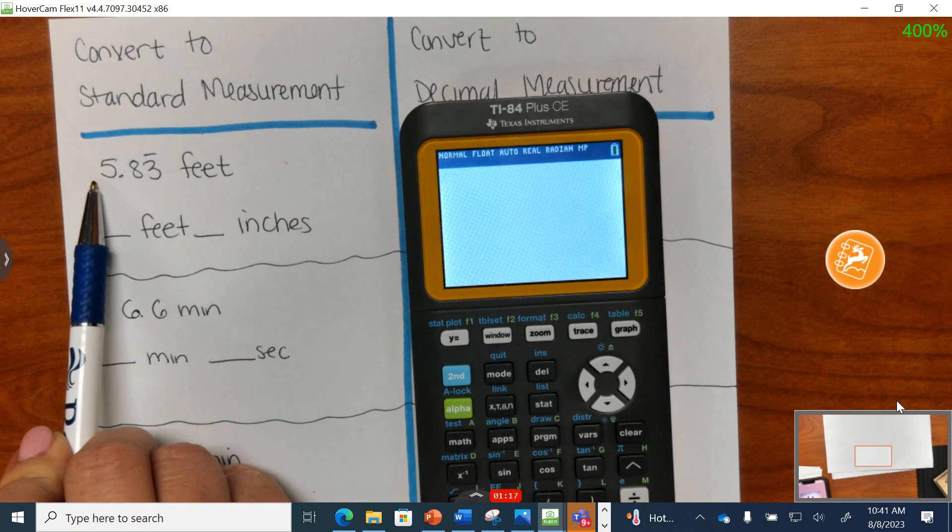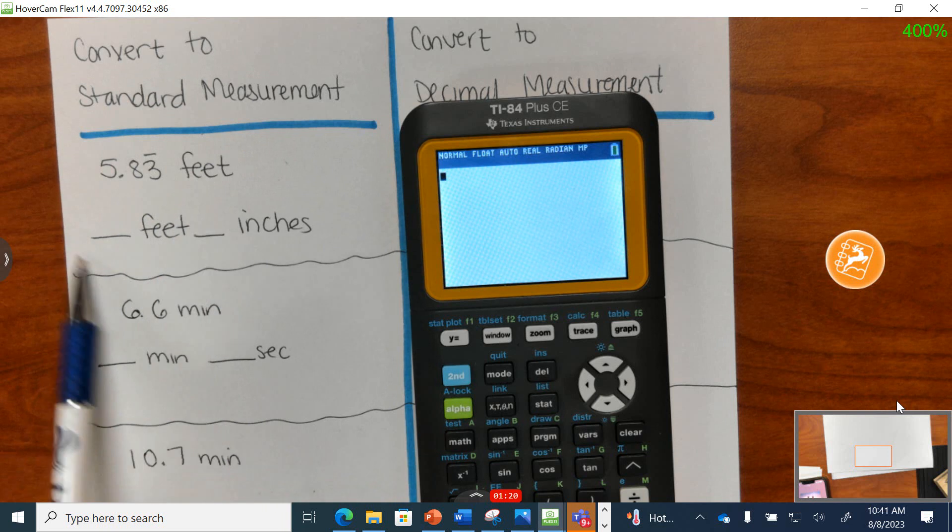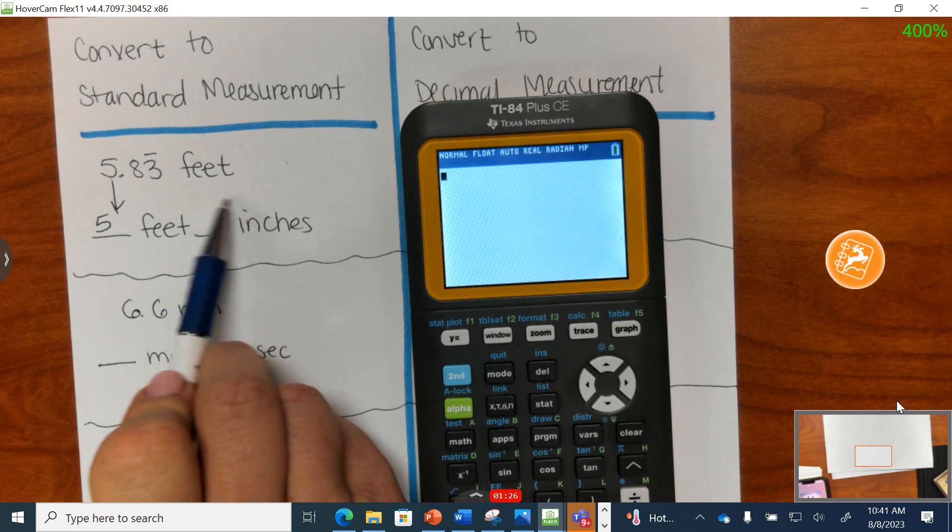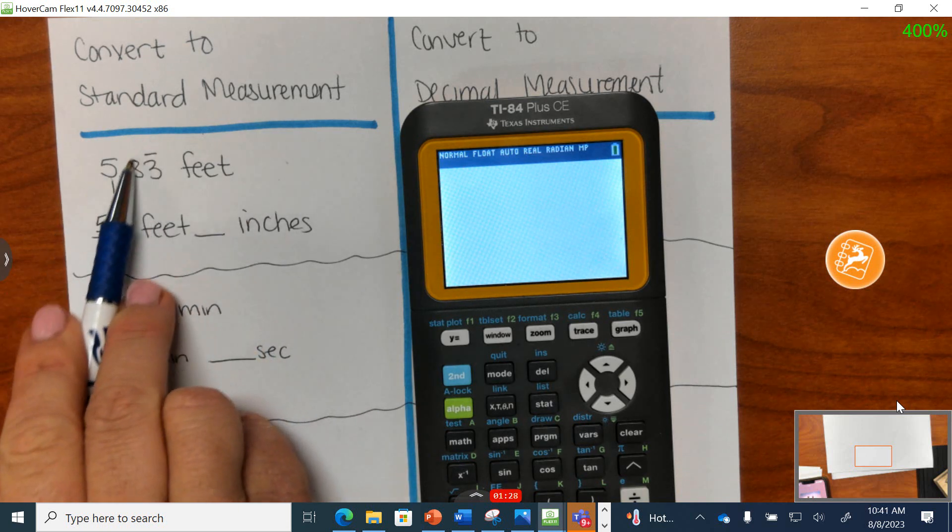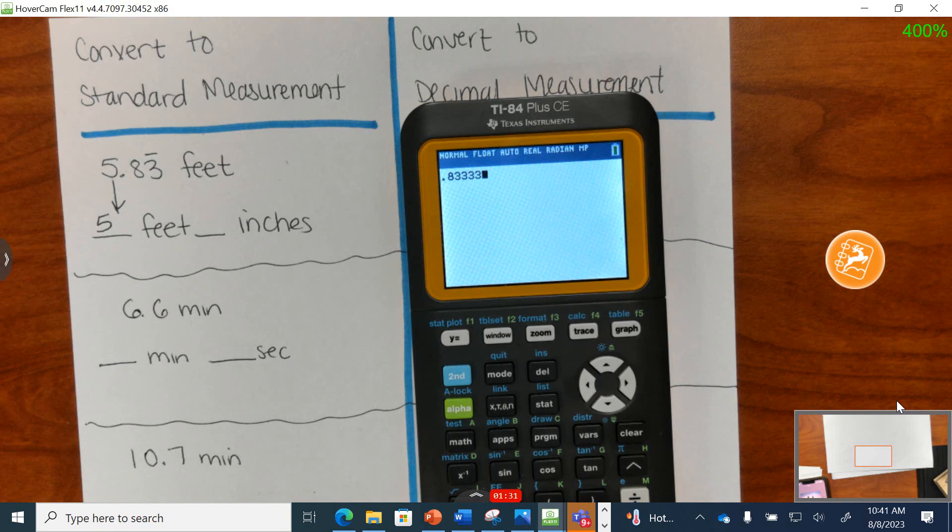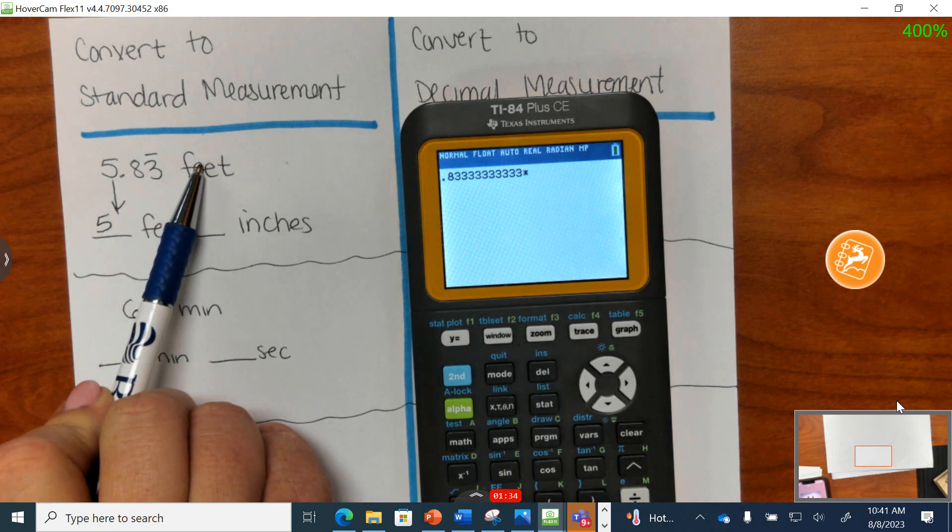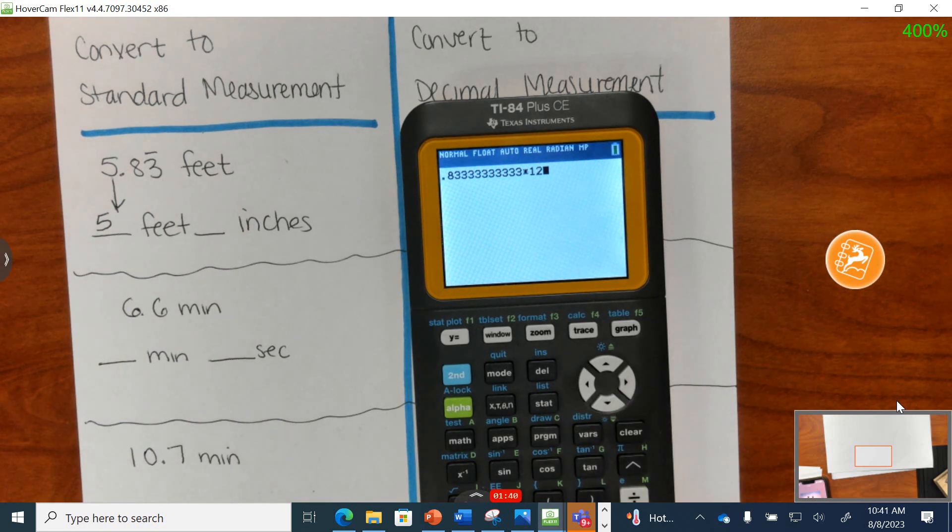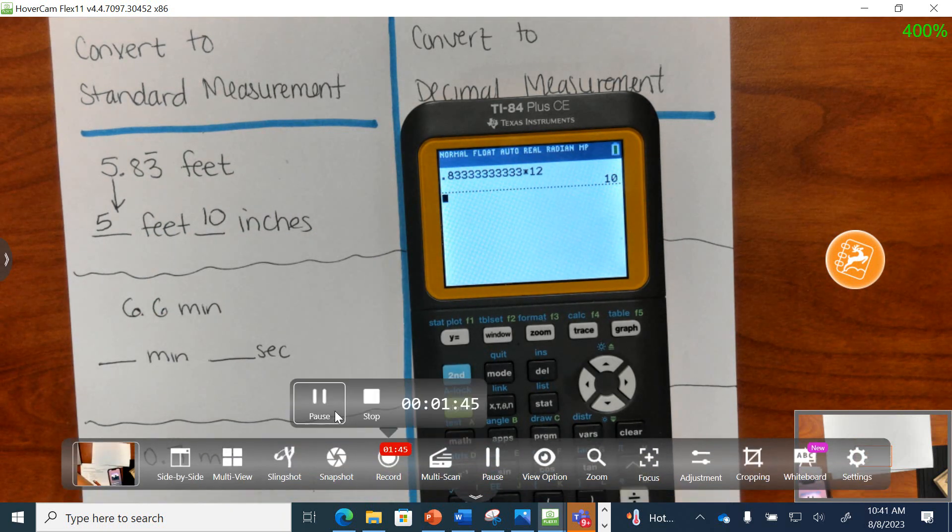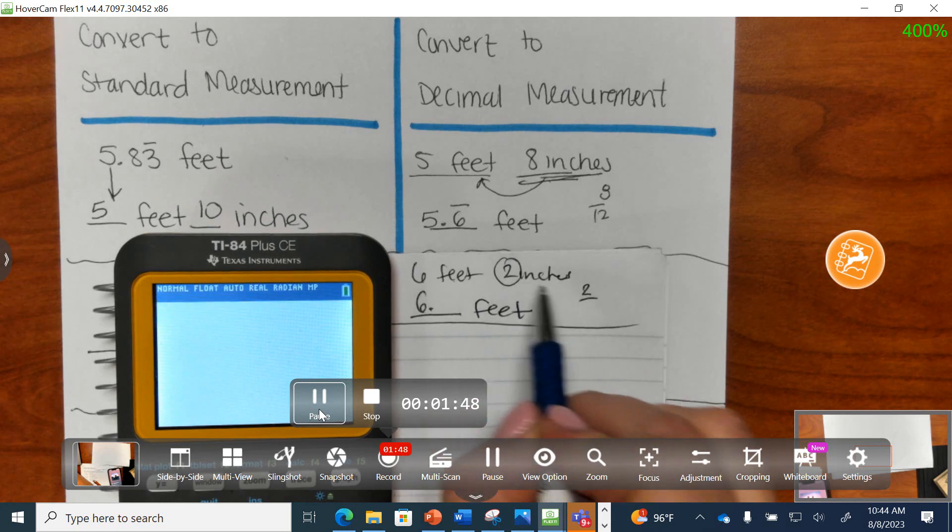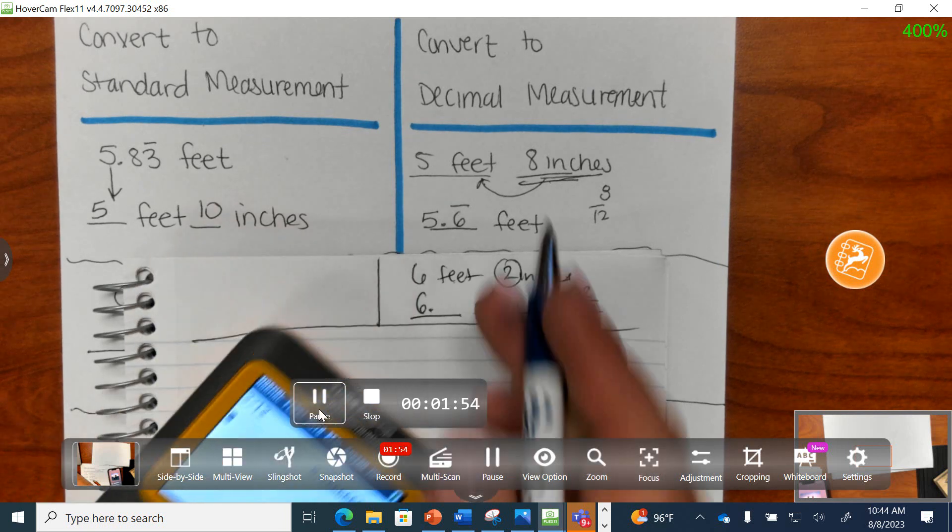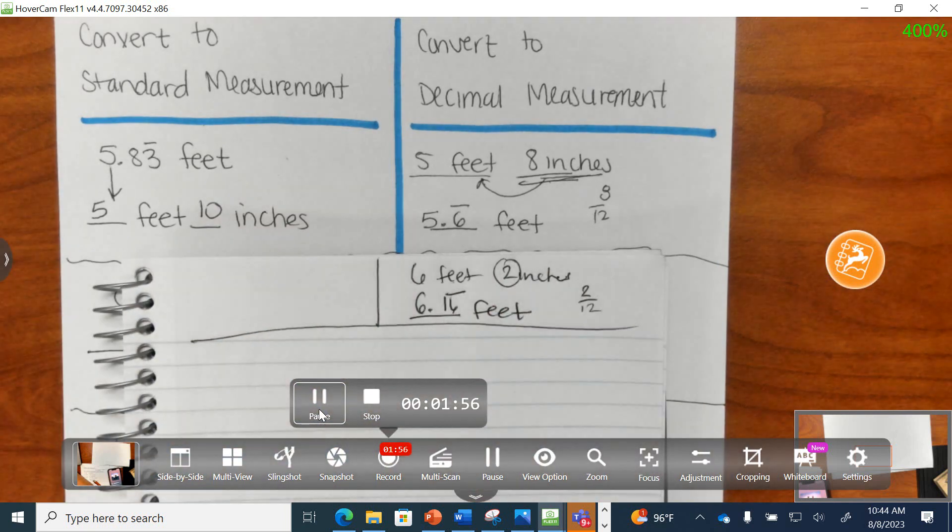Let's go on to that next side. If I'm given decimal form, 5.83 repeating, and I want to put it into standard form, there's officially 5 feet. Now how many exact inches? We're going to write down this part, 0.83 repeating. Put down lots of 3s. And ask yourself how many inches are there in 1 foot? There are 12.